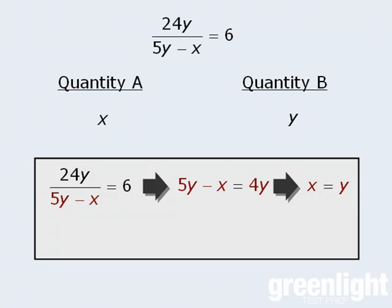Now that we've shown that x equals y, we can see that quantity A and quantity B must be equal, which means the correct answer here is C.